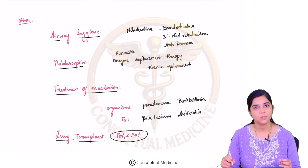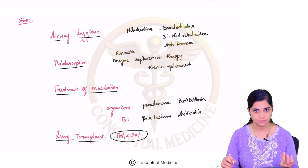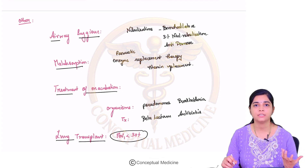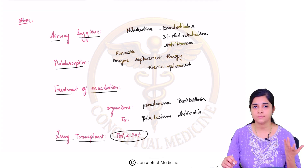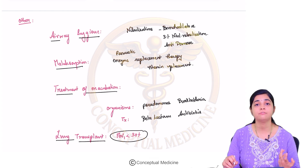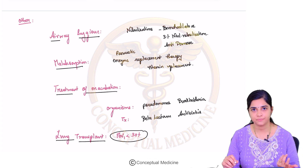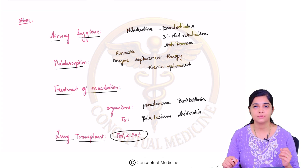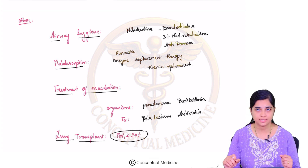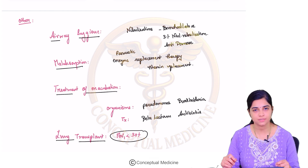So with this, we've understood what cystic fibrosis is. To recap: cystic fibrosis is an autosomal recessive exocrinopathy caused by CFTR mutations. It results in accumulation of thick secretions within the lungs predominantly, causing obstructive airway disease and recurrent infections, along with pancreatic involvement and infertility. Treatment involves targeted therapies using potentiators or correctors, supportive airway management, broad-spectrum antibiotics during exacerbations, vaccination, and lung transplant as a final option. Thank you.